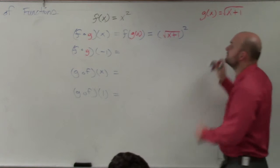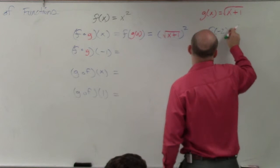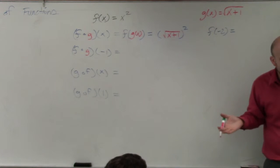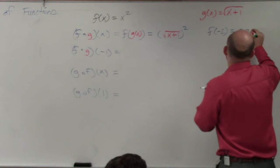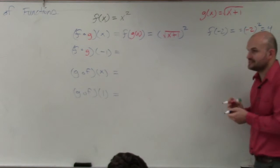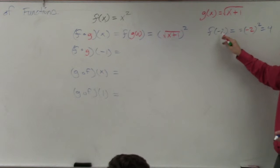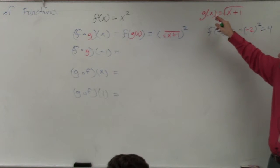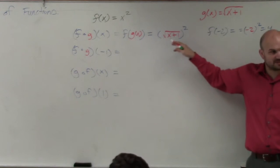For instance, if I gave you this. If I said f of 2, negative 2, what would you do? Where would you put negative 2 in for? x. So it would look like this. Negative 2 squared, which equals 4. Yes? That makes sense? All I'm doing now, instead of using negative 2, I'm using g of x. And g of x is square root of x plus 1. So I'm just plugging square root of x plus 1 in for there.